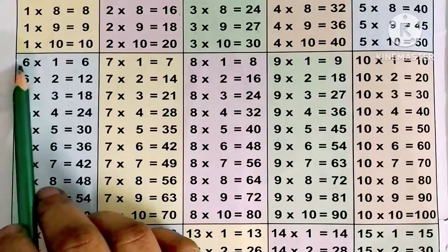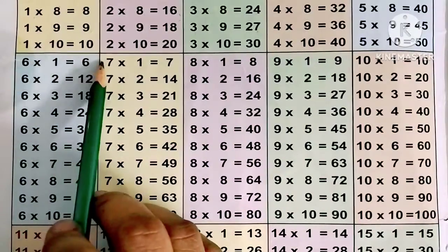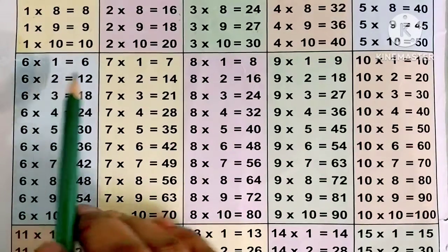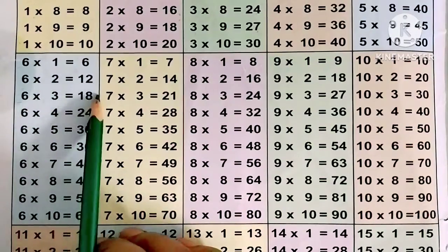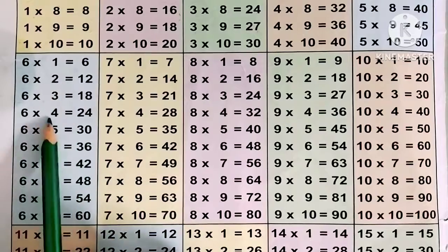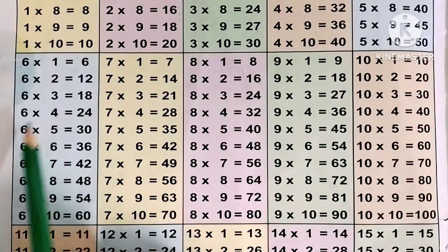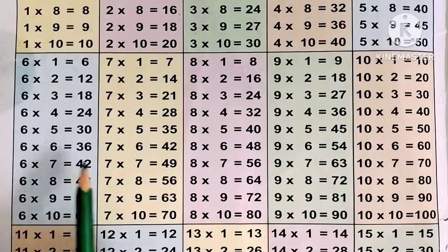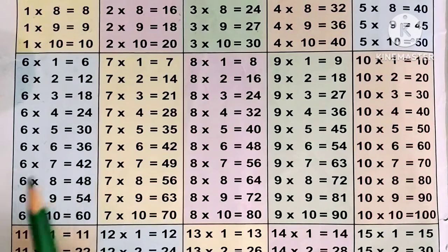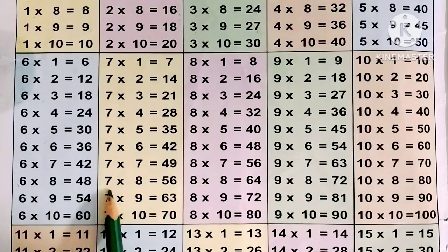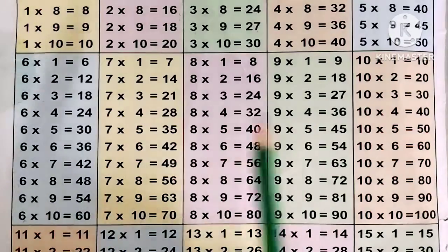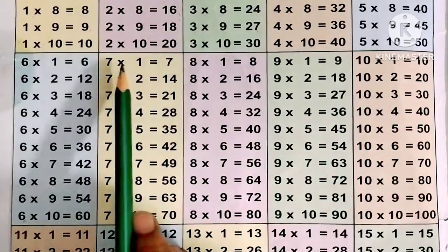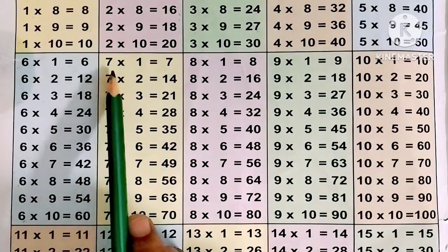5 tens are 50. 6 ones are 6, 6 twos are 12, 6 threes are 18, 6 fours are 24, 6 fives are 30, 6 sixes are 36, 6 sevens are 42, 6 eights are 48, 6 nines are 54, 6 tens are 60.